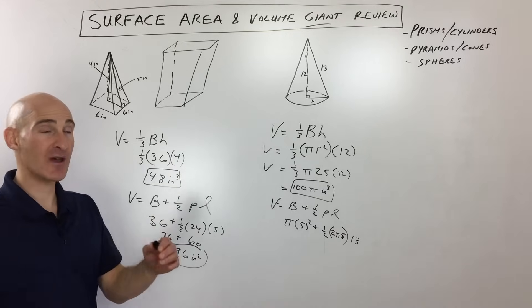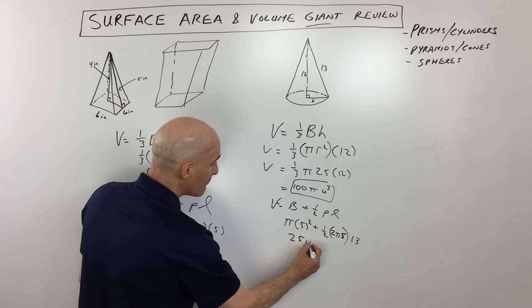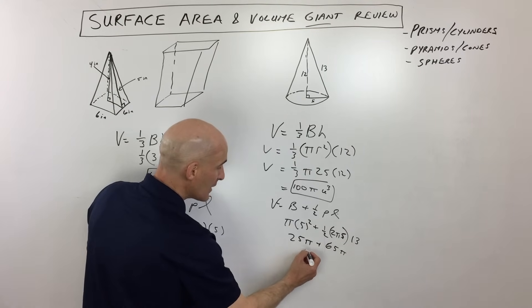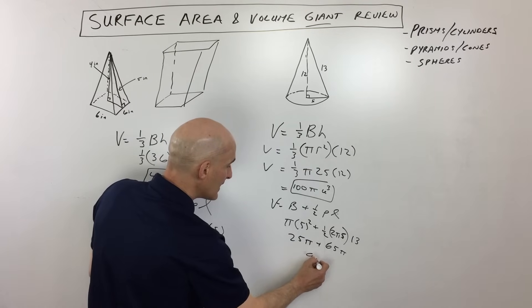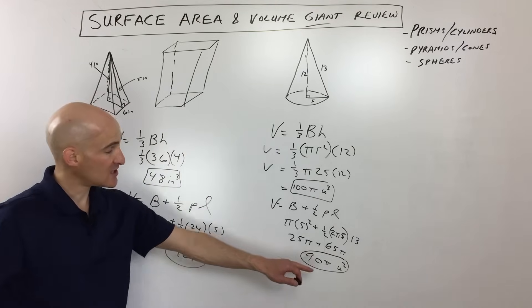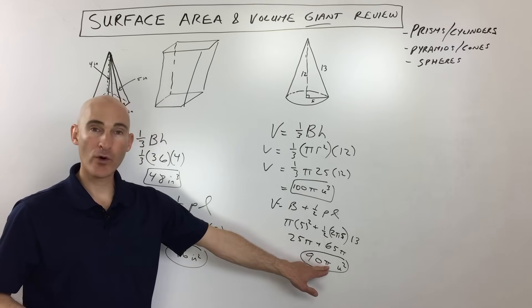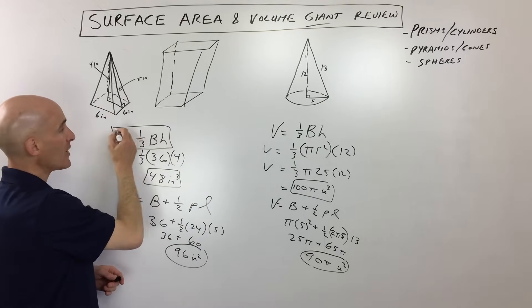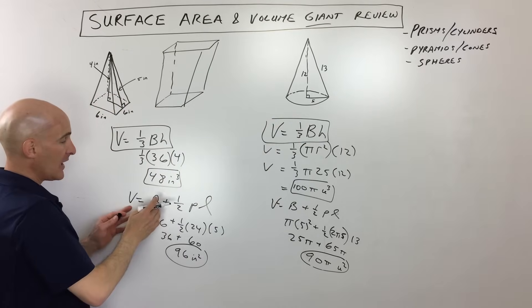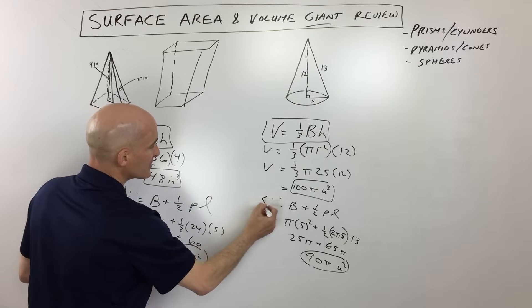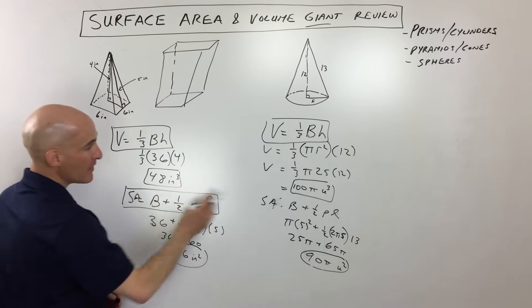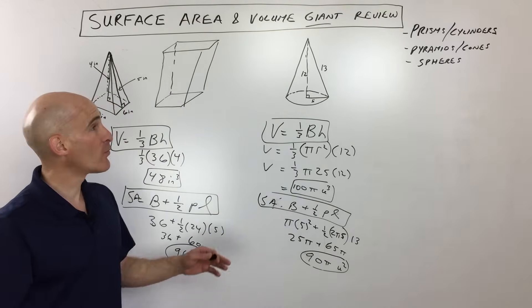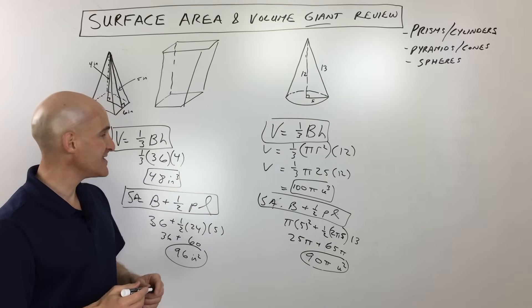For the cone, we use the same formula B + ½Pl, but the base is a circle and the perimeter is the circumference 2πr. So: πr² + ½ × 2πr × l = π(5²) + ½ × 2π(5) × 13 = 25π + 5π × 13 = 25π + 65π = 90π units squared. That's an exact answer; multiply by 3.14 for an approximation. For pyramids and cones: volume is ⅓Bh, surface area is B + ½Pl.